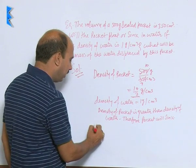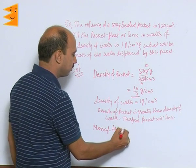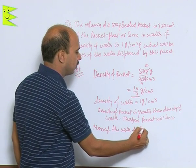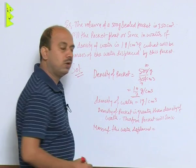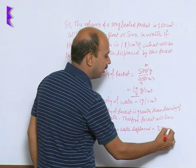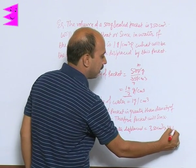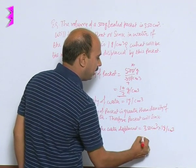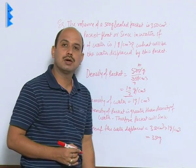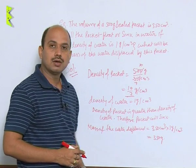We can write simply here, mass of the water displaced is equal to 350 centimeter cube into 1 gram per centimeter cube, that will be equal to 350 grams. So mass of the water displaced is equal to 350 gram.